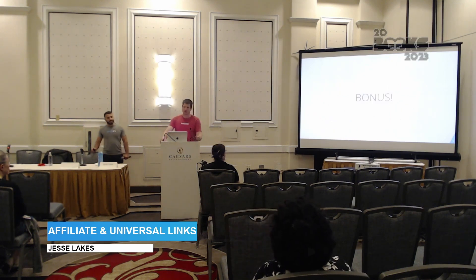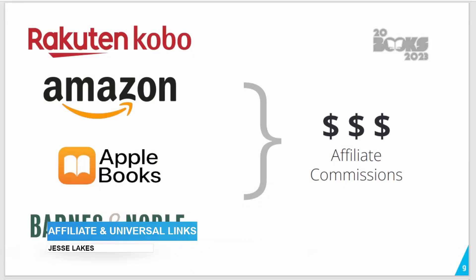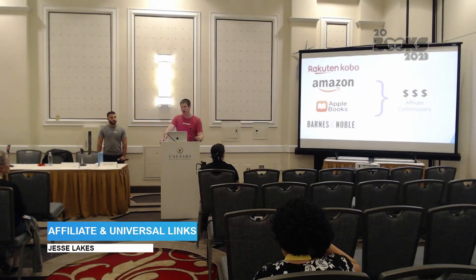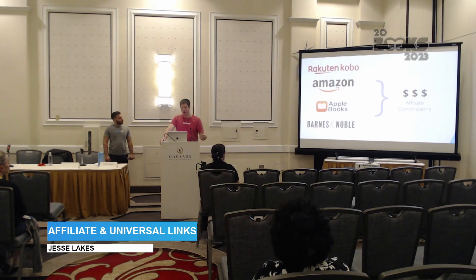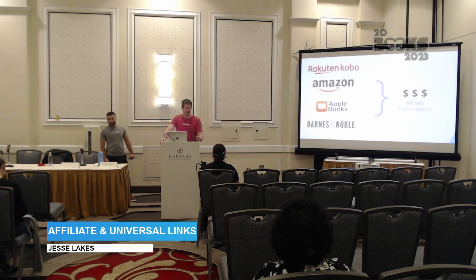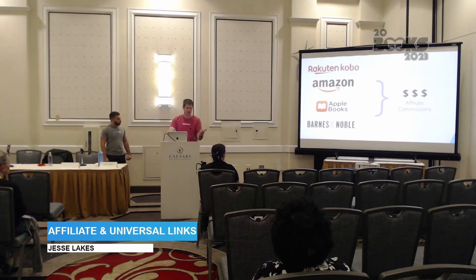Bonuses that are cash are even better. The seventh reason to use a universal book link is around affiliate links. A lot of the major book retailers offer affiliate programs — they reward you for sending sales and traffic to their store, and you can often use an affiliate link within a universal book link. So you can earn not only your royalty from selling the book, but also a commission from recommending the sale. The affiliate space is something we care a lot about, so let the organizers know if you'd like a dedicated session on it.